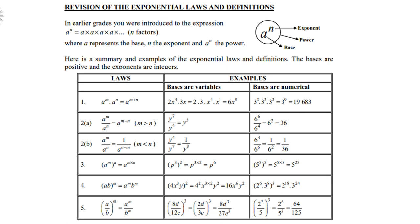For example, 8d over 12e to the power 3. First apply BODMAS: simplify within the bracket — 4 divides into 8 twice and into 12 thrice. Then 2 to the power 3 is 8, d to the power 3, and 3 to the power 3 is 27, e to the power 3. Another example: 3 times 2 gives 2 to the power 6 over 5 to the power 3, which is 64 over 125.